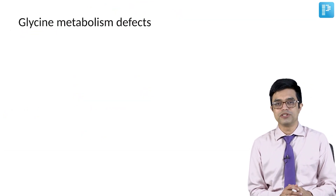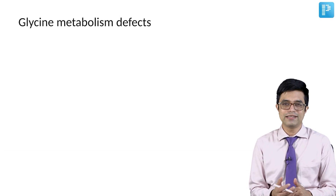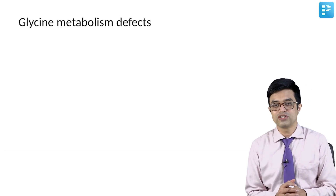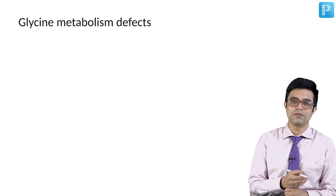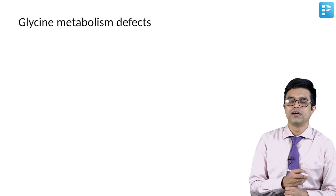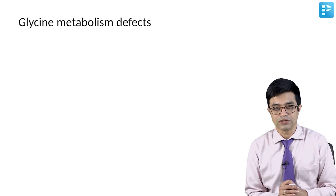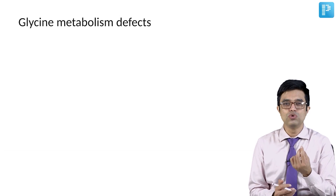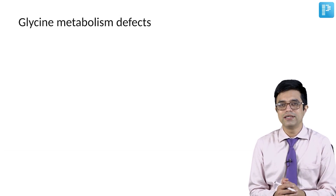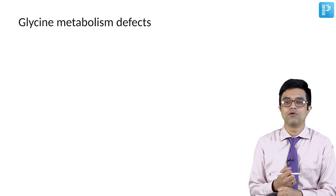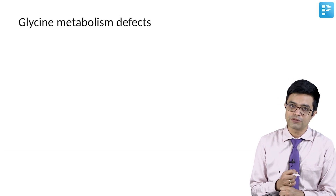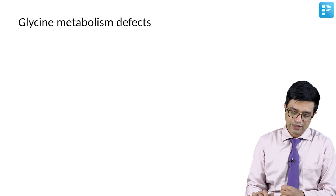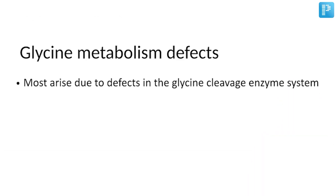Moving on to glycine metabolism defects: glycine is a non-essential amino acid and its metabolism is closely related to serine metabolism. Glycine is a very simple, small, neutral amino acid and is involved in the CNS as a neurotransmitter.